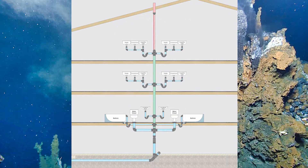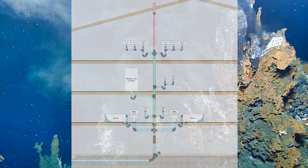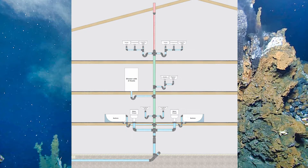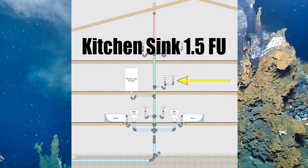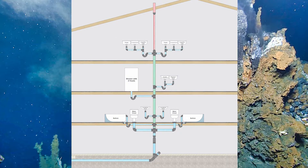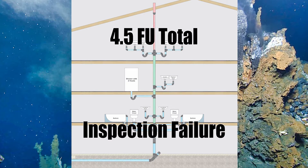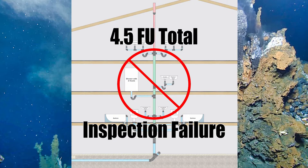I'm also allowed to take these same two fixtures and put them up on the next story. Here's another scenario: I've got a shower with two heads — that's three fixture units — and a kitchen sink which is one and a half fixture units draining in from one story. I add those up and get four and a half fixture units. I won't be allowed to do that; I'll have to change something there.